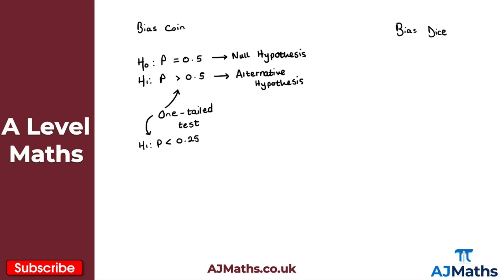We can also have a two-tailed test. For a two-tailed test, H0 follows the same format — the parameter p is equal to some value. But for H1 in a two-tailed test, we say the parameter is not equal to some value — for example, p is not equal to 0.4. That is an example of a two-tailed hypothesis test.